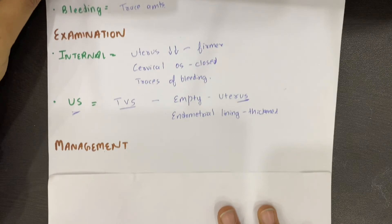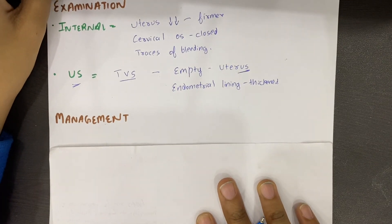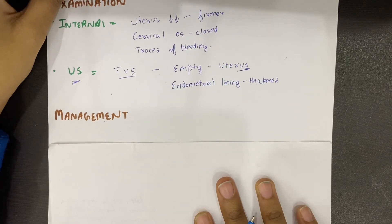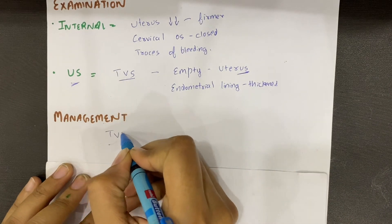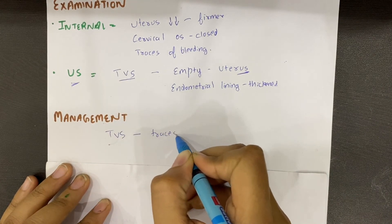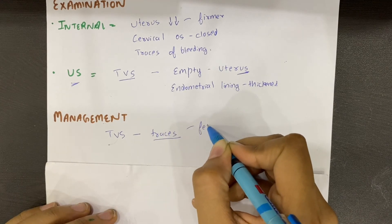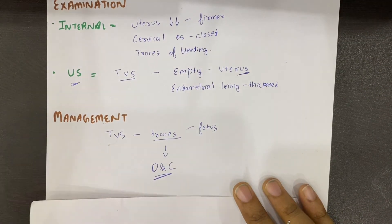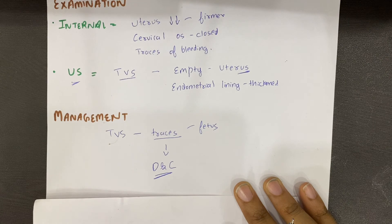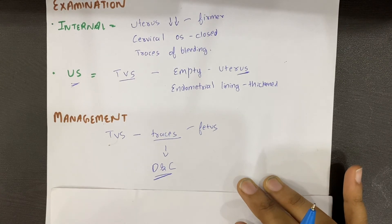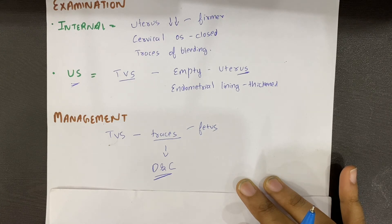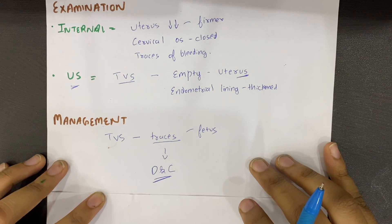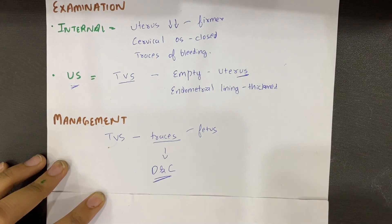The management for complete miscarriage: although the miscarriage is complete, if the doctor finds some traces of fetal material still present, then D&C may be performed for cleaning. Otherwise, active management is generally not required. If the woman has had significant blood loss, we can check for anemia and manage accordingly. If you have notes, the link is in the description. Thank you.